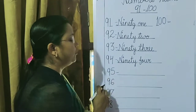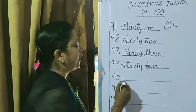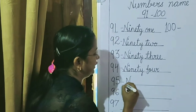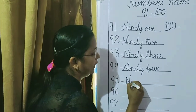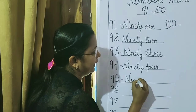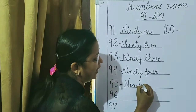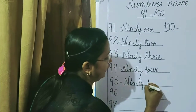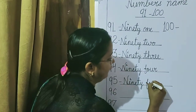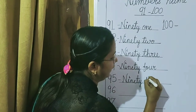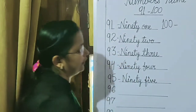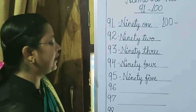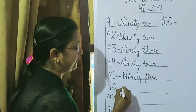After 94, 95. We have to write the spelling of 95. N-I-N-E-T-Y for 90. Then, 5 — F-I-V-E. So that is 95.